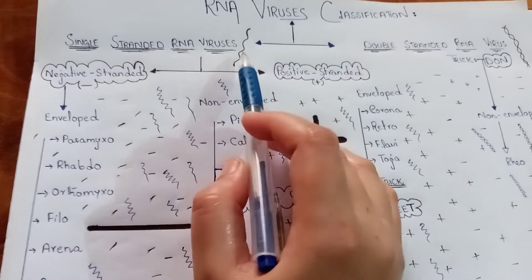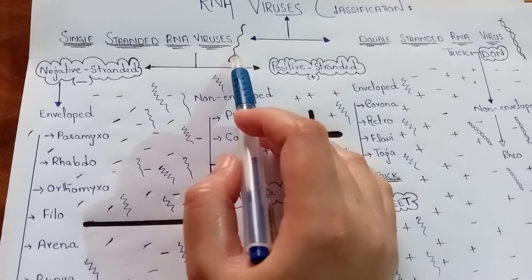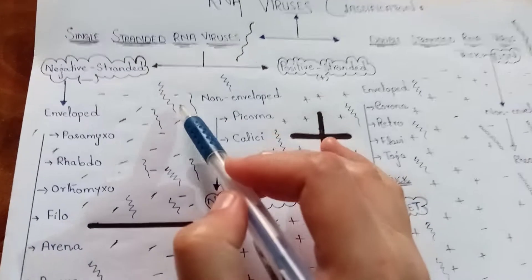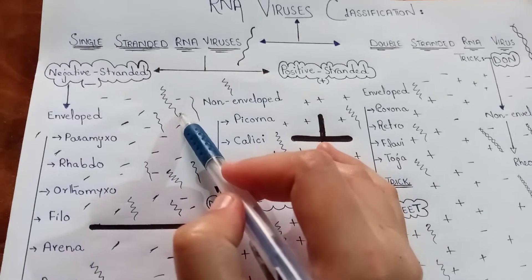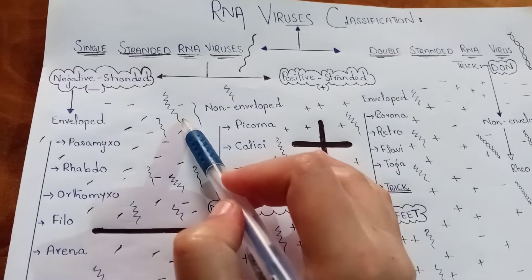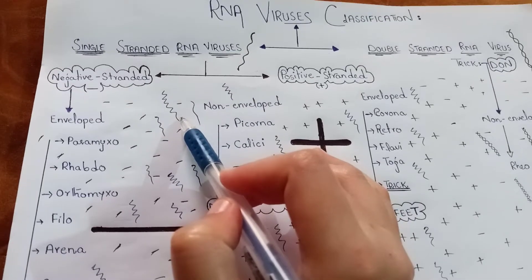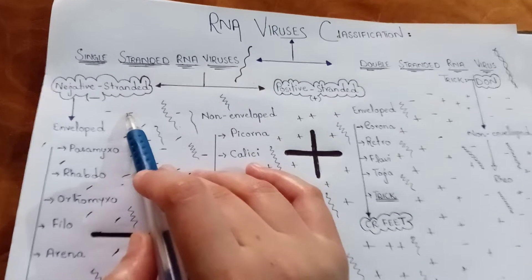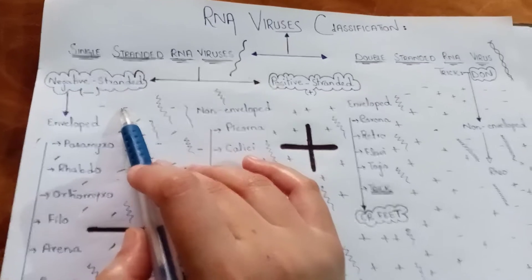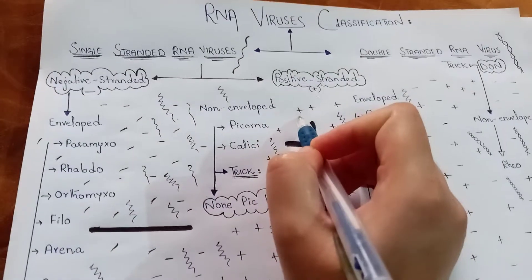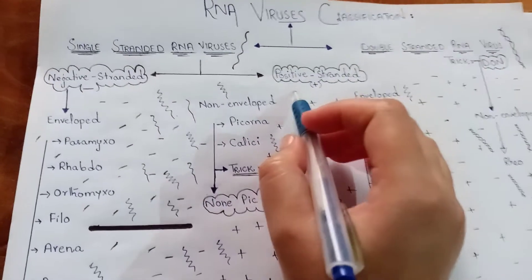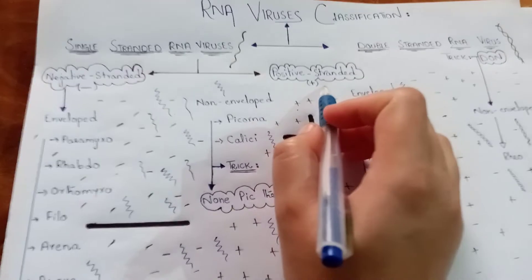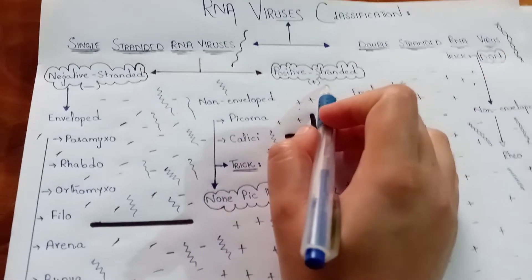Now, for single stranded RNA viruses: if the single strand has negative polarity, we classify it as negative stranded RNA viruses, while if it has positive polarity, it will be called positive stranded RNA viruses.